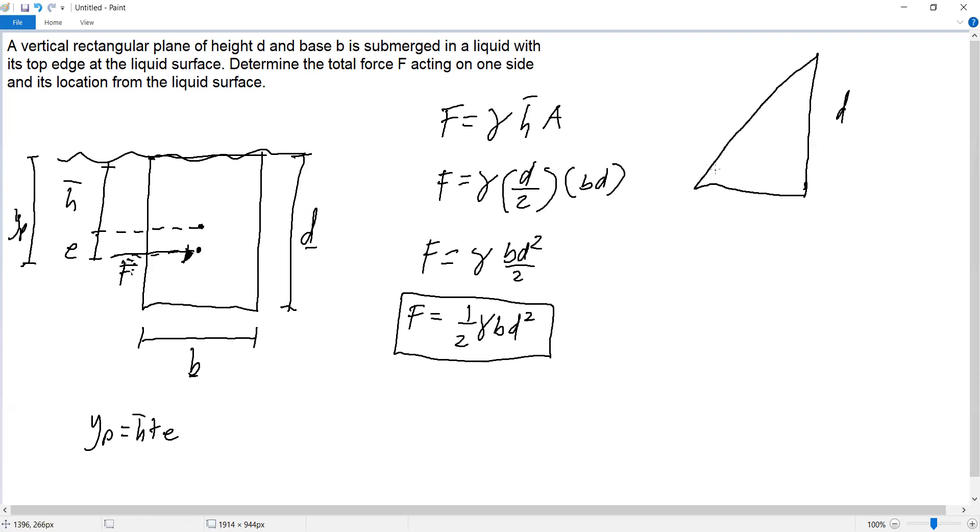So here is the force, right? The resultant is located at one-third. So what's the height? One-third only. Since the height is D down to the bottom, to get the height from liquid surface to this point, just subtract. So yp equals D minus one-third D.